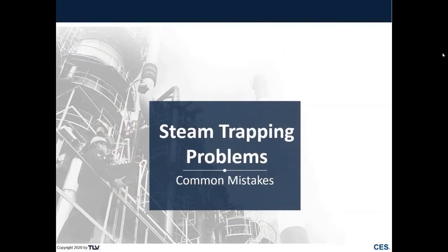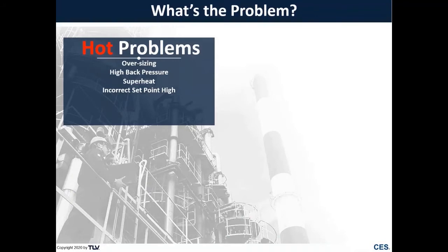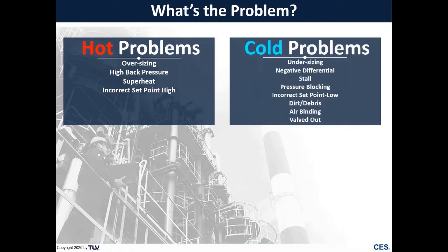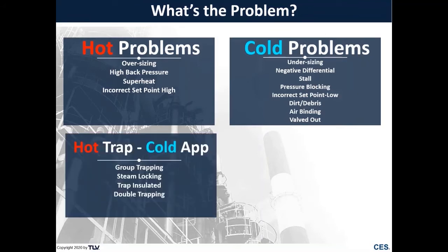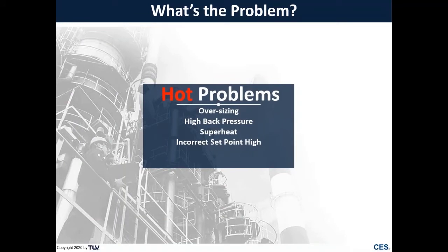Now I'm going to turn it over to David Adams, who will go through some common steam trap problems and mistakes. We have four different types of CDL problems: hot problems, where the trap has failed open and is leaking steam; cold problems, where condensate cannot drain properly and backs up; hot trap but cold application, where the trap can be hot but the application is actually cold; and hot-or-cold trap, which depends on the trap type and installation.